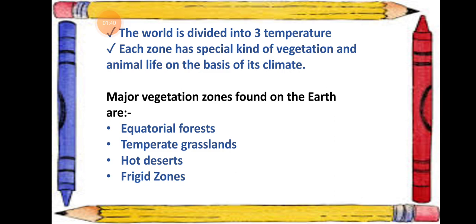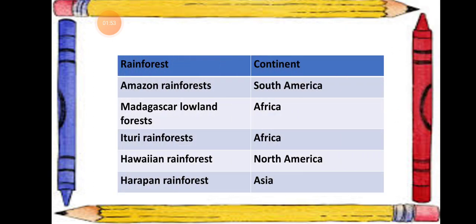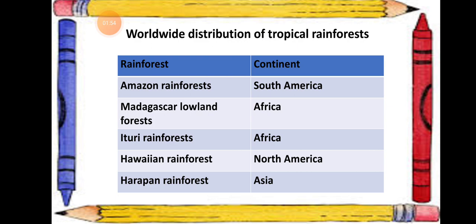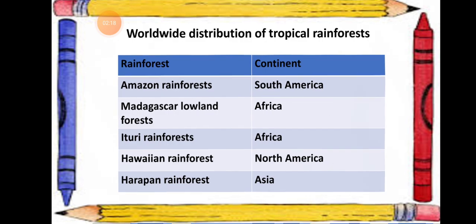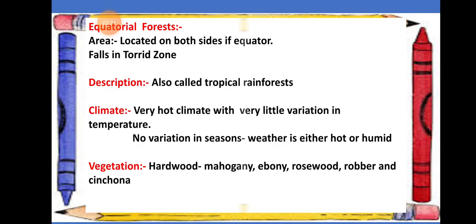Today we will study the different vegetation zones found on the earth, such as equatorial forests, temperate grasslands, hot deserts, and the frigid zone. We will begin with the equatorial forest. In this slide you can see a table showing the worldwide distribution of tropical rainforests. You have to learn this table as questions can be asked from it in the exam.